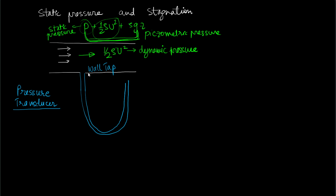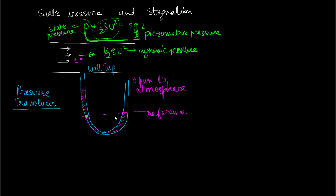When fluid flow is happening, the pressure is reduced at the tap, leading to an elevation of the manometric fluid. At one end the tube is open to the atmosphere. If we denote the measurement point as point one and take a reference line, we write the hydrostatics equation at points A and B: p_A equals p_B, where p_A is p1 plus rho g times height h plus rho_manometric times g times delta h.